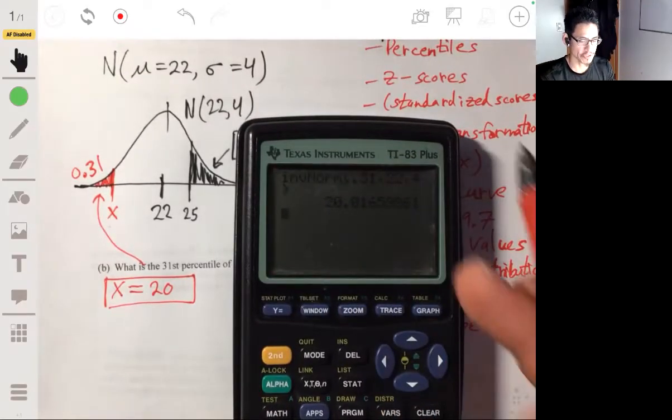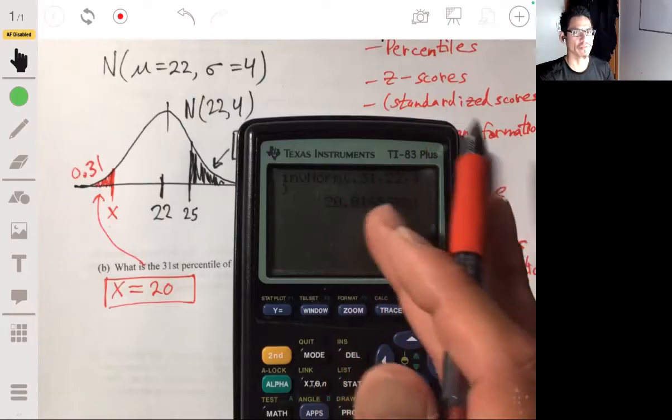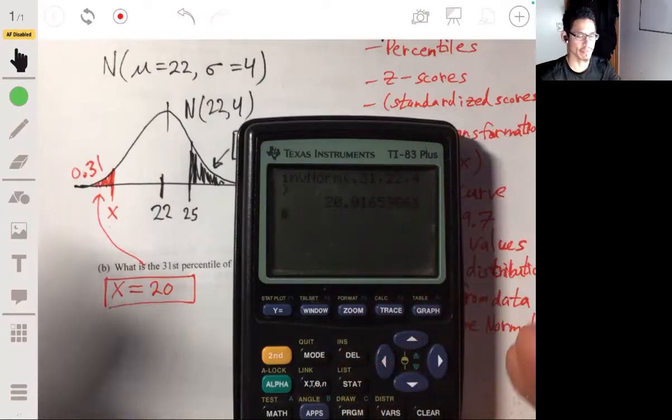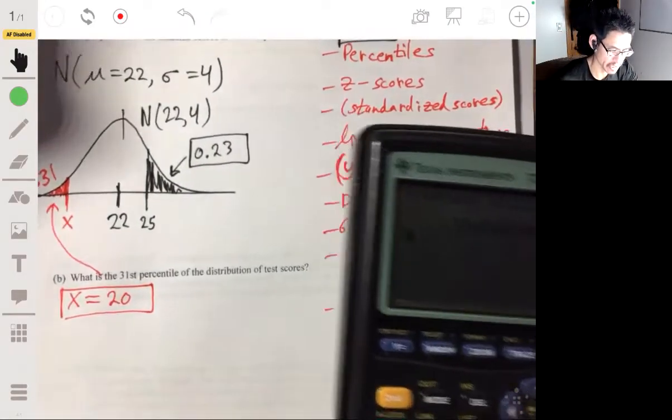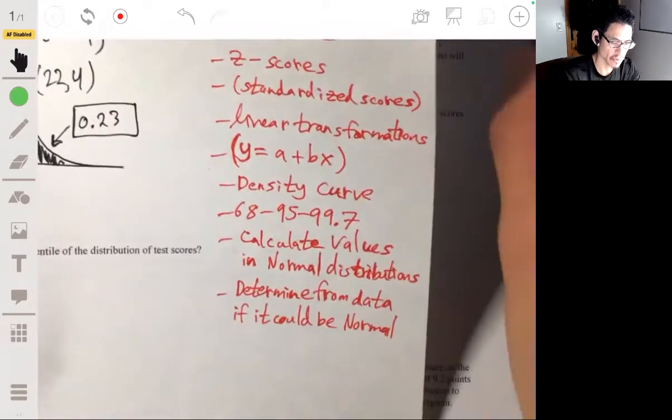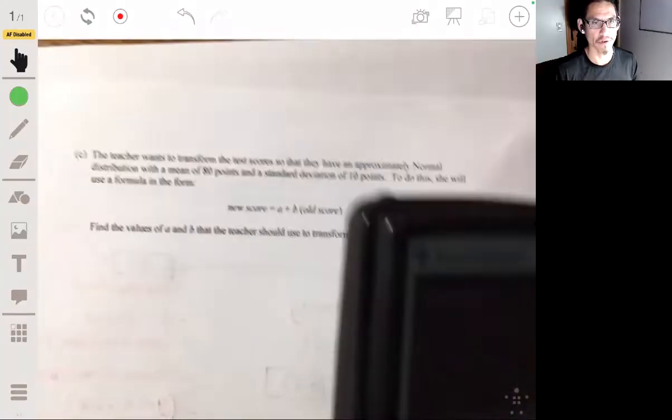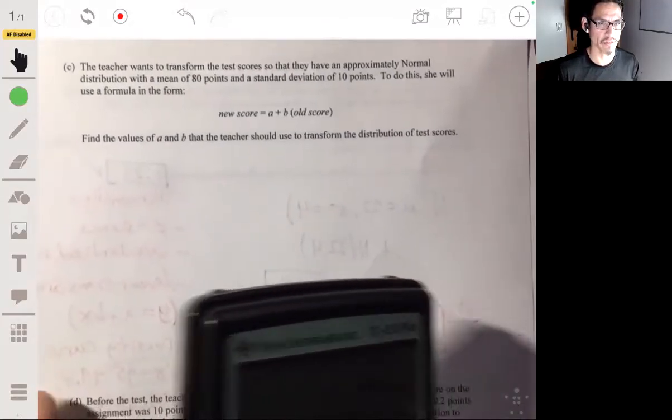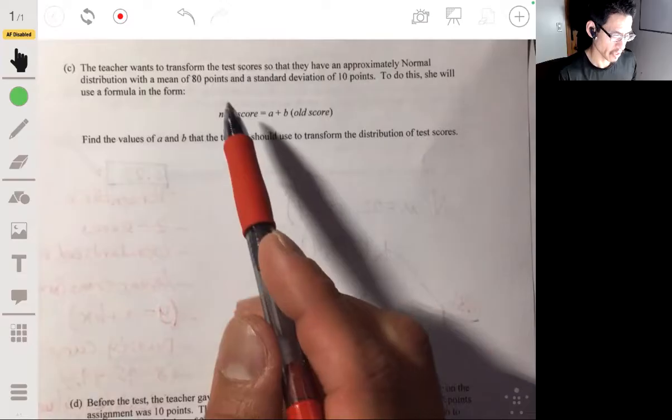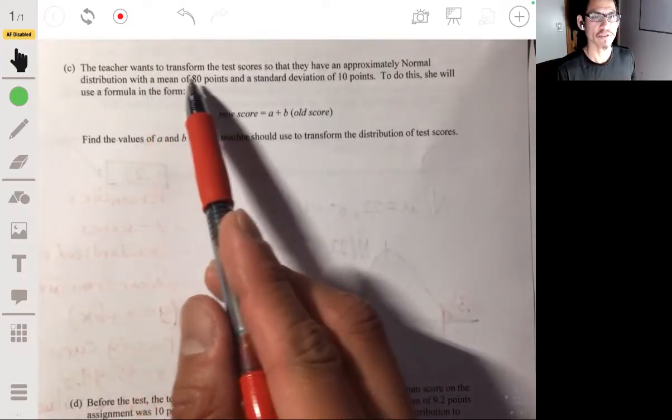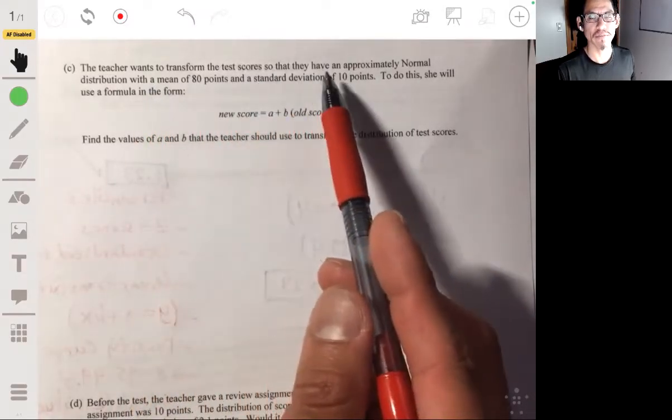And also, remember don't worry about the rounding and all that in AP Stats. They really don't care. It's not about that in this course, so don't freak out about like how do I have to round to the nearest tenth, hundredth. Your answer is never going to be wrong because of rounding.